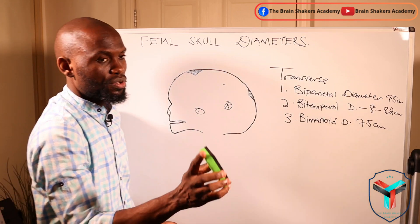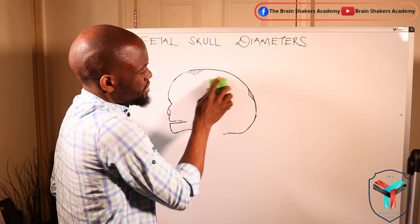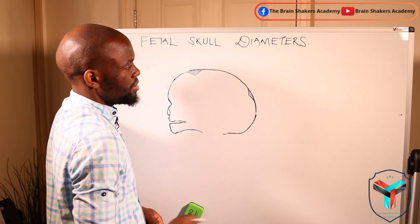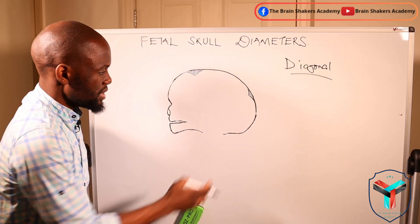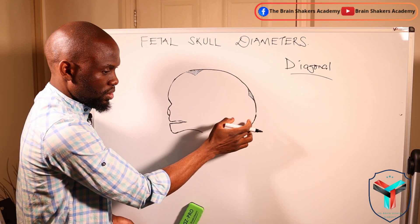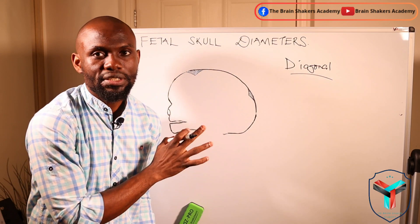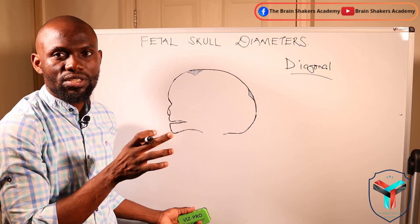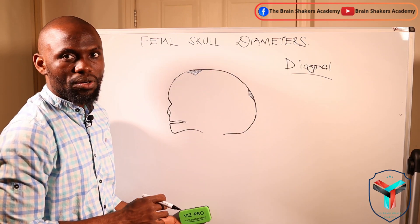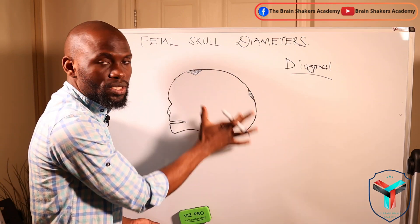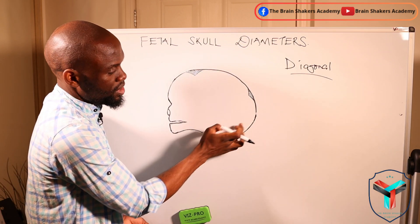Now let's quickly look at the diagonal diameters. So now we are looking at the diagonal diameters. As we look at diagonal diameters we can start from the posterior aspect which is the occiput. If you haven't looked at the fetal skull video, you can find it on my YouTube channel, Brain Shakers Academy. Now let's quickly look at them starting with the occiput.